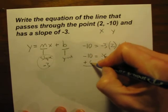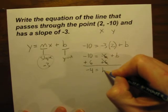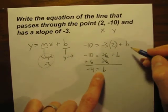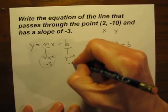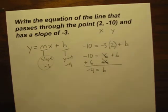Negative 10 plus 6 is negative 4 is equal to b. So now we've figured out what the y-intercept is. The b in this equation must be negative 4.